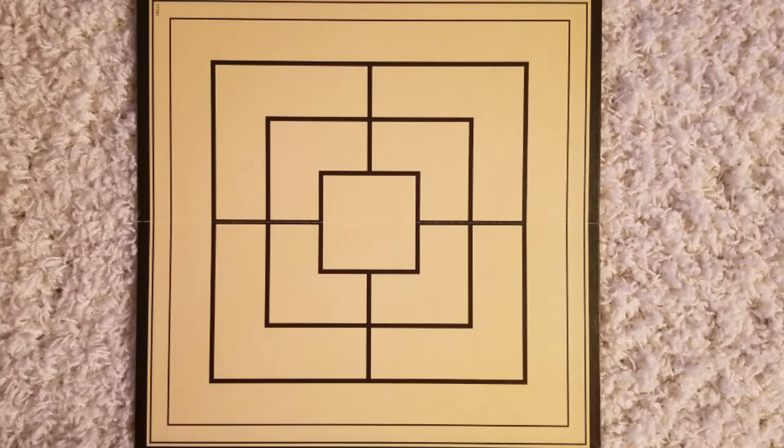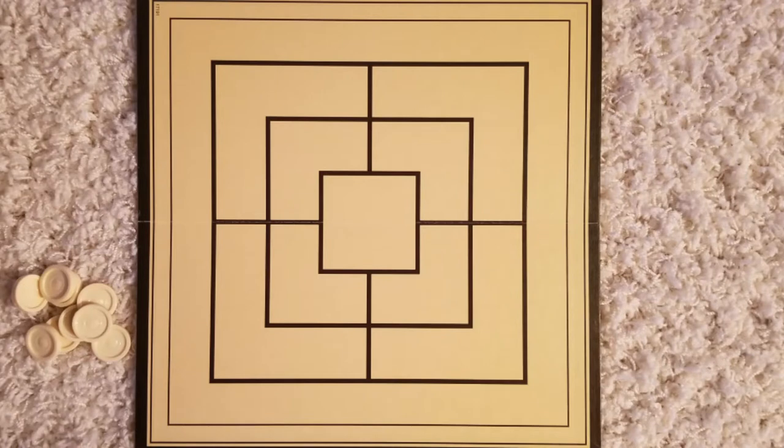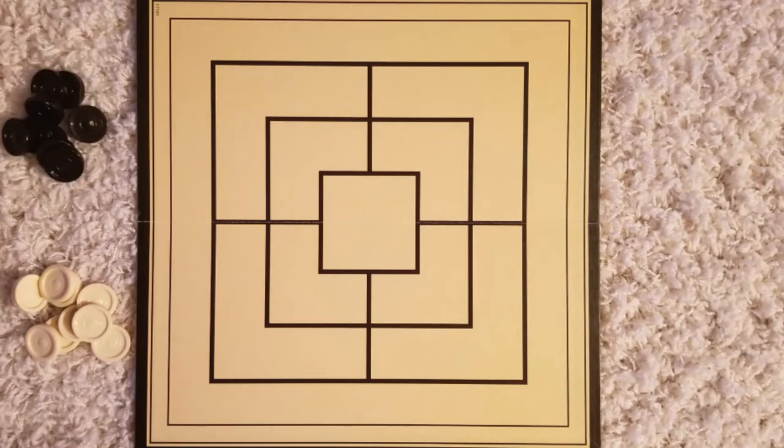This is a two-player game. The game is played on the mill board. Each player has nine pieces. There are two and a half phases in this game.